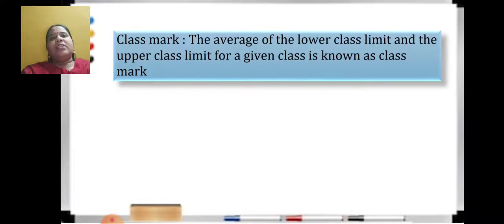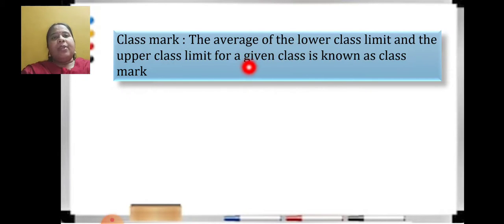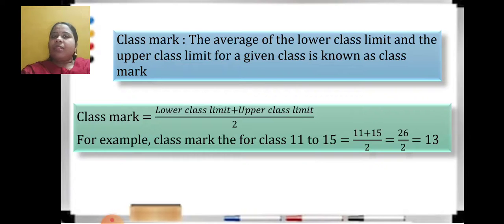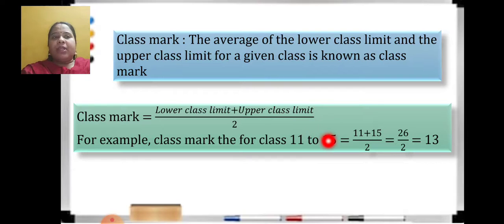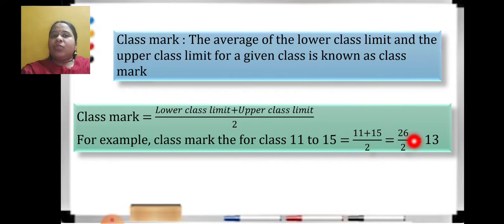One more important formula is class mark, which will be useful even in finding mean this year. The average of the lower class limit and upper class limit for a given class is called class mark. The formula is: class mark equals lower class limit plus upper class limit divided by 2. For example, for the class 11 to 15: lower limit plus upper limit upon 2 gives 26 by 2, which comes to 13.